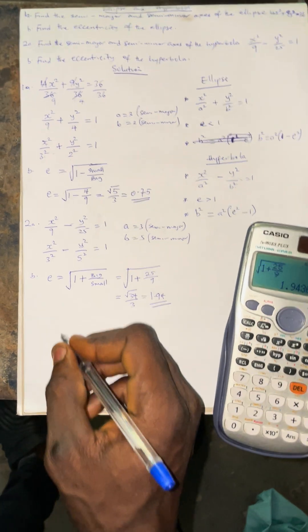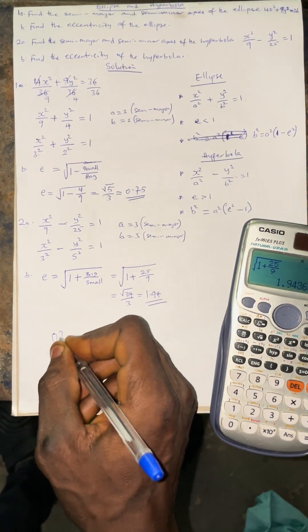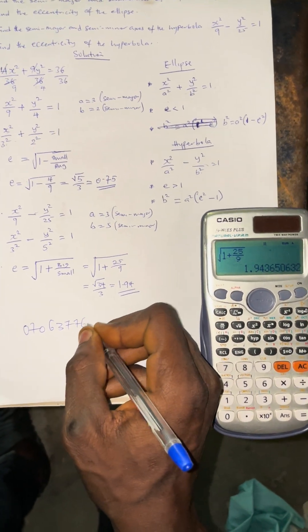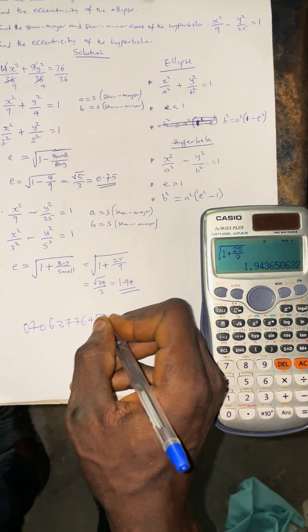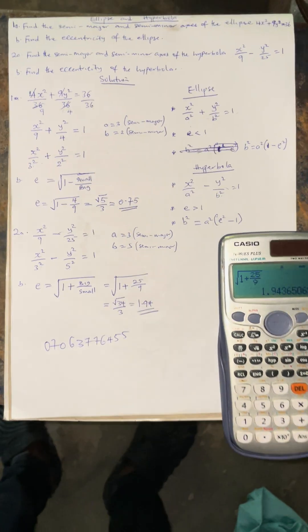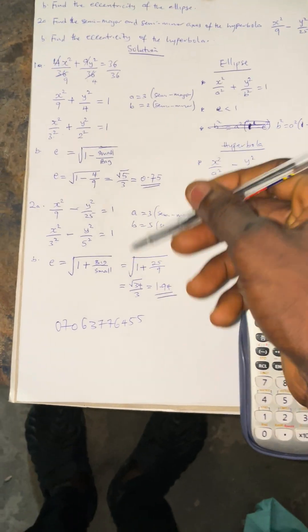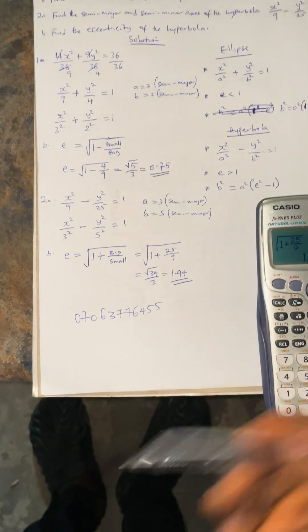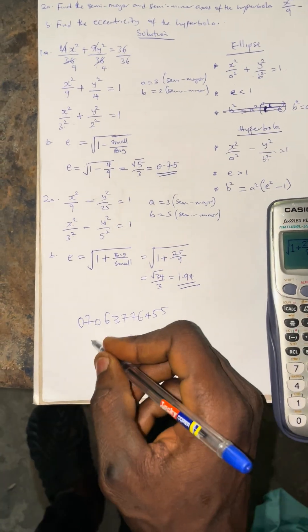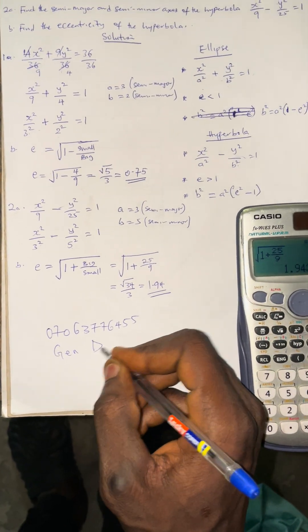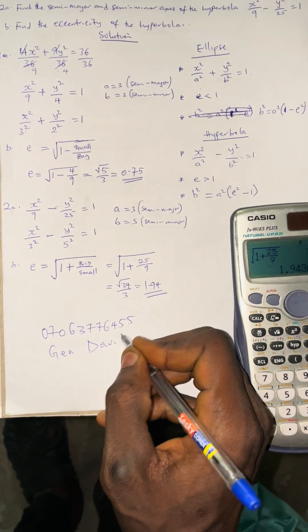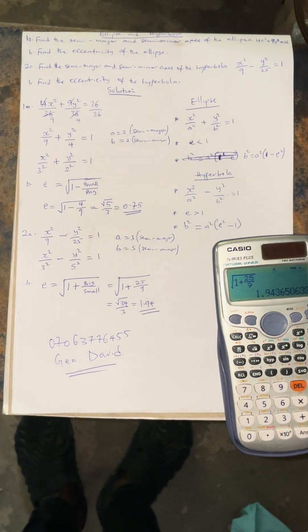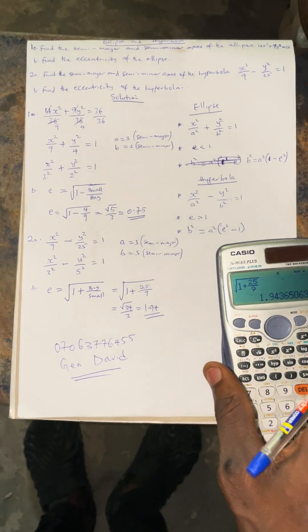This is the way to find the eccentricity of the ellipse and the eccentricity of the hyperbola using a shortcut formula, without going through the normal derivation. I remain General David. Please like, comment, and share for the next video. God bless you.